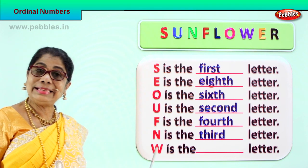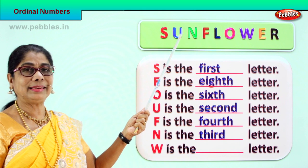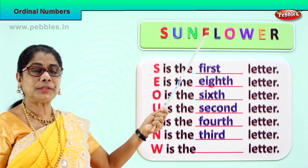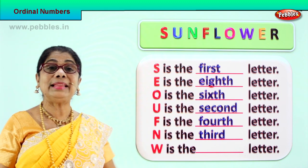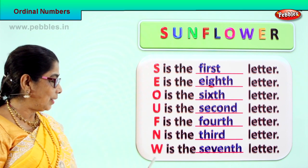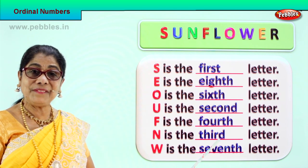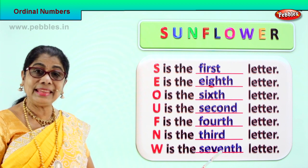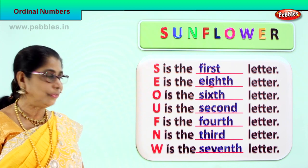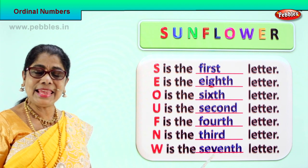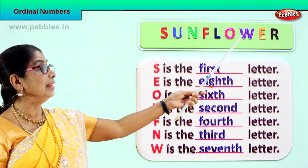Now we have the last letter here — W. Let's look at the position of W: first, second, third, fourth, fifth, sixth, seventh. W is in the seventh position. So W is the seventh letter. Spell seventh: S-E-V-E-N-T-H. You know the spelling of seventh — you add on TH. Spell S-E-V-E-N-T-H. W is the seventh letter.